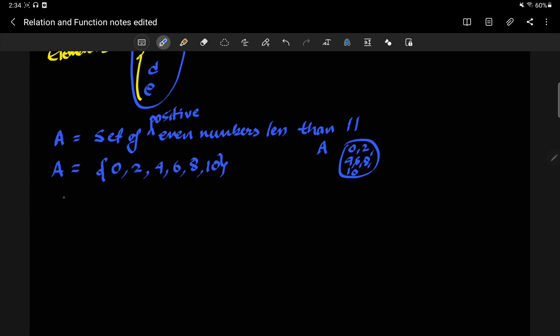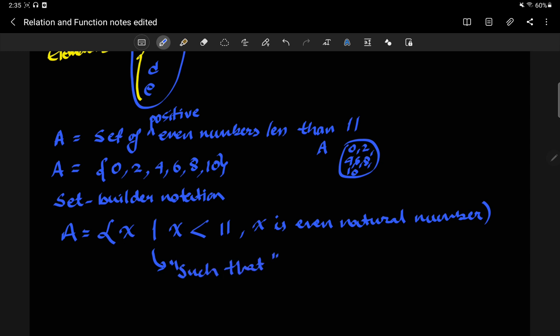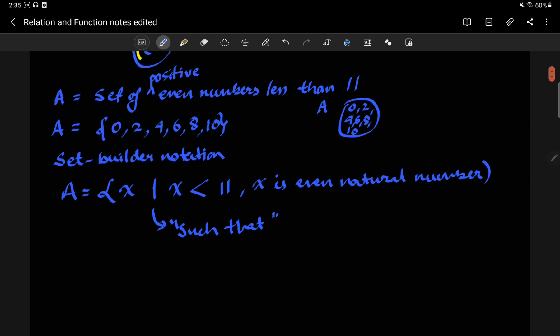Now, there is a separate notation in which sets can be written, which is called a set builder notation. This is not extremely crucial to what we will be learning later on in the course, but it's just something that would be nice to know. So it would be written in this form. How this is read is this vertical line is read as such that. So this says A is a set of all elements x such that x is less than 11, comma means and x is an even natural number. So this is just another way of writing what we just wrote up there.